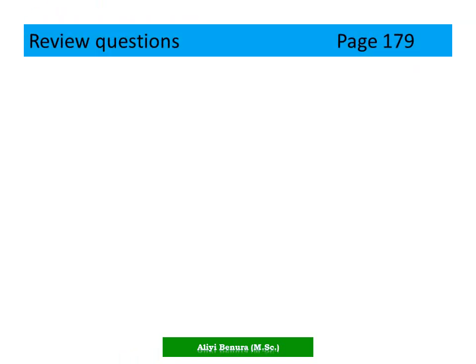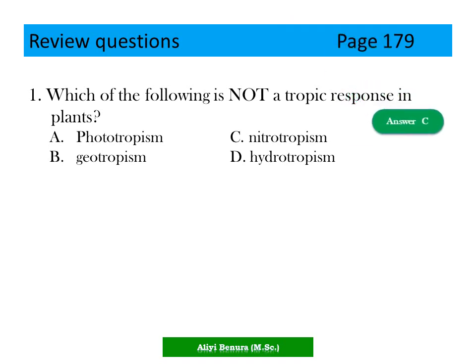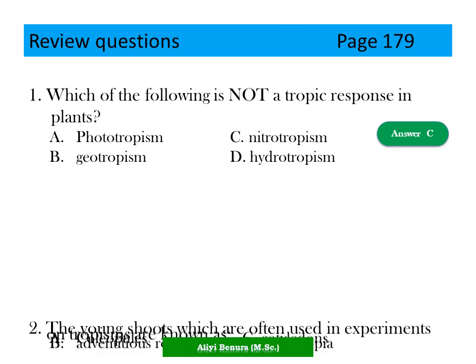Review questions, page 179. Which of the following is not a tropic response in plants? A. Phototropism, B. Geotropism, C. Nitrotropism, D. Hydrotropism. The answer should be C, Nitrotropism - it is not a tropic response in plants.